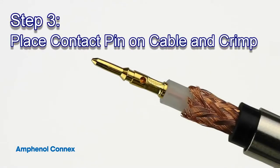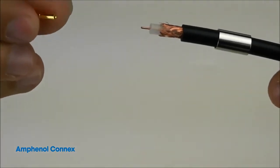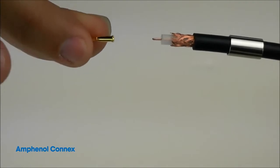Step 3. Place the contact pin onto the cable and crimp it in place using the crimp tool. To do this, begin by placing the contact pin into the center conductor of the cable.